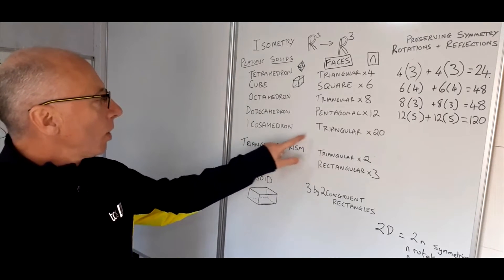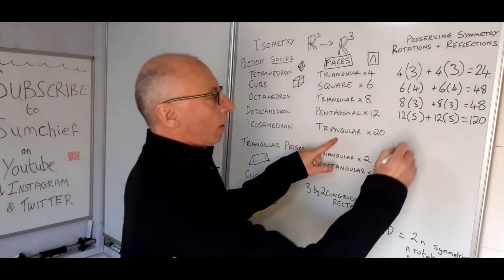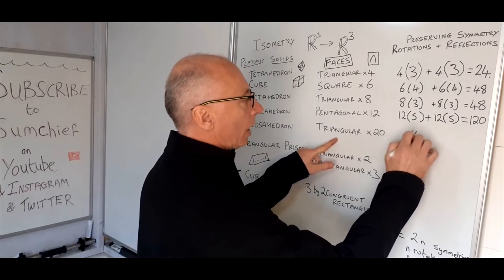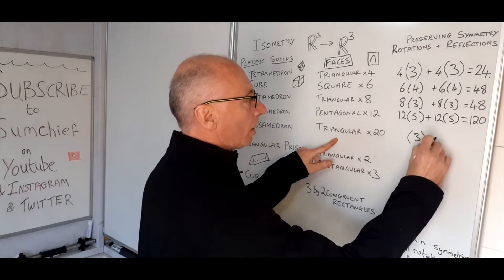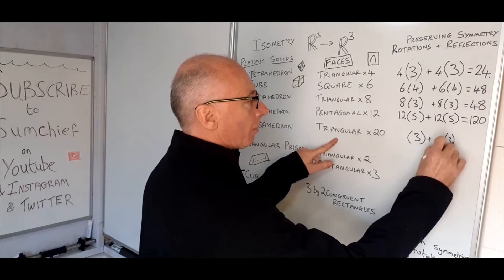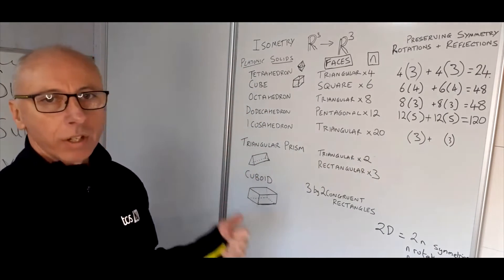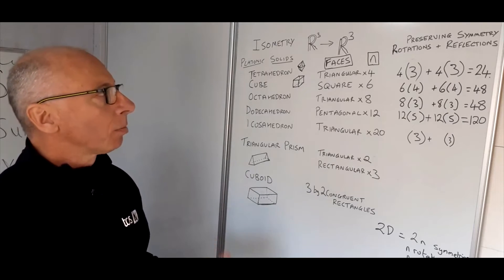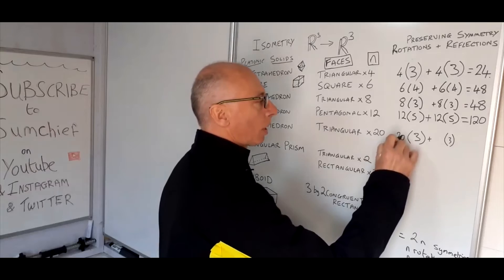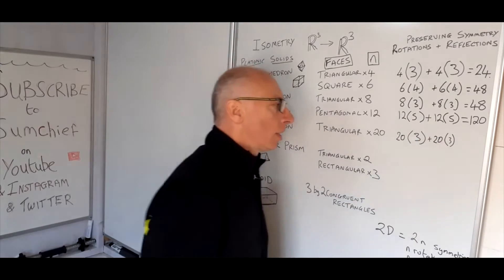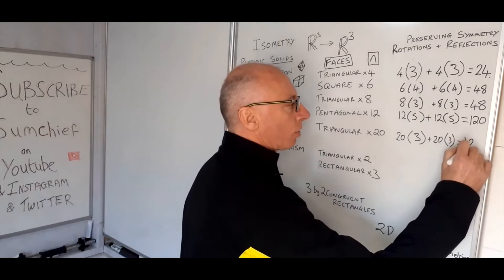The icosahedron has 20 triangular faces. The triangle has three of each — three rotations and three reflections — six altogether. There are 20 faces, so multiply each by 20: 20 times three is 60, twice over gives us 120 preserving symmetries.